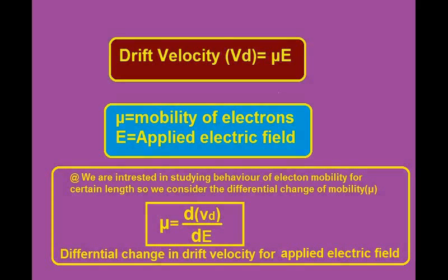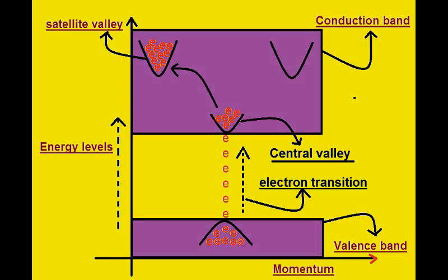Rearranging gives mobility μ = dVD/dE — the differential change in drift velocity for different applied electric fields. This differential change in drift velocity with respect to electric field represents the electron mobility.